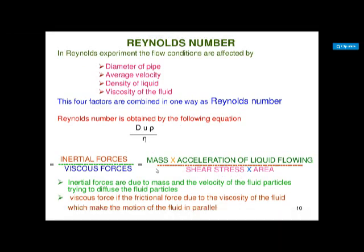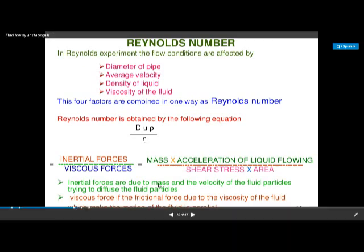If inertial forces increase, laminar flow is more likely. If viscous force decreases — that is, a decrease in viscosity — it causes turbulent flow. The viscous force due to the viscosity of the liquid makes the motion of the fluid parallel. This is the calculation and formula of the Reynolds number.